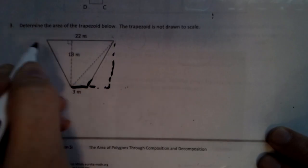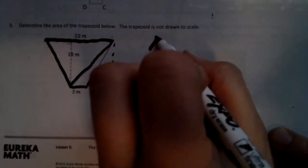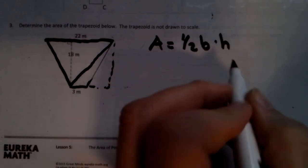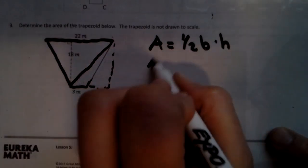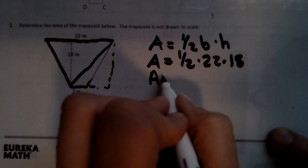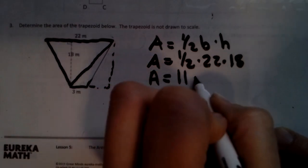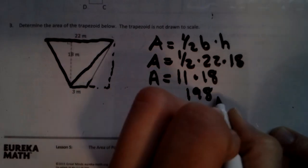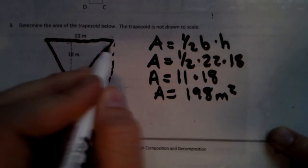So this big triangle right here, which is the majority of this shape, we already know the formula: area equals half base height, or base times height divided by 2. So area equals half of 22 times 18, area equals 11 times 18. You're going to get 198 meters squared for that big triangle.